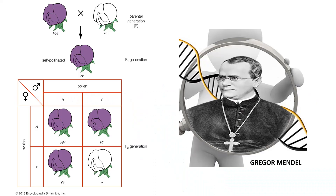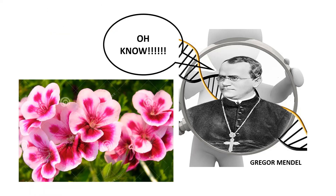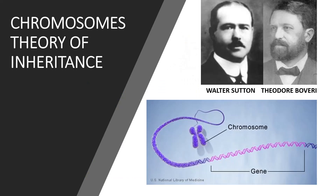The works of Mendel serve as the foundation of modern principles of genetics. Geneticists further explored the patterns of inheritance because there are other possibilities and inquiries that cannot be answered by the laws of Mendel. Walter Sutton and Theodore Boveri became popular because they found the best evidence that an inherited trait is determined by chromosomes. The chromosomes' theory of inheritance explains that genes are in the chromosomes.